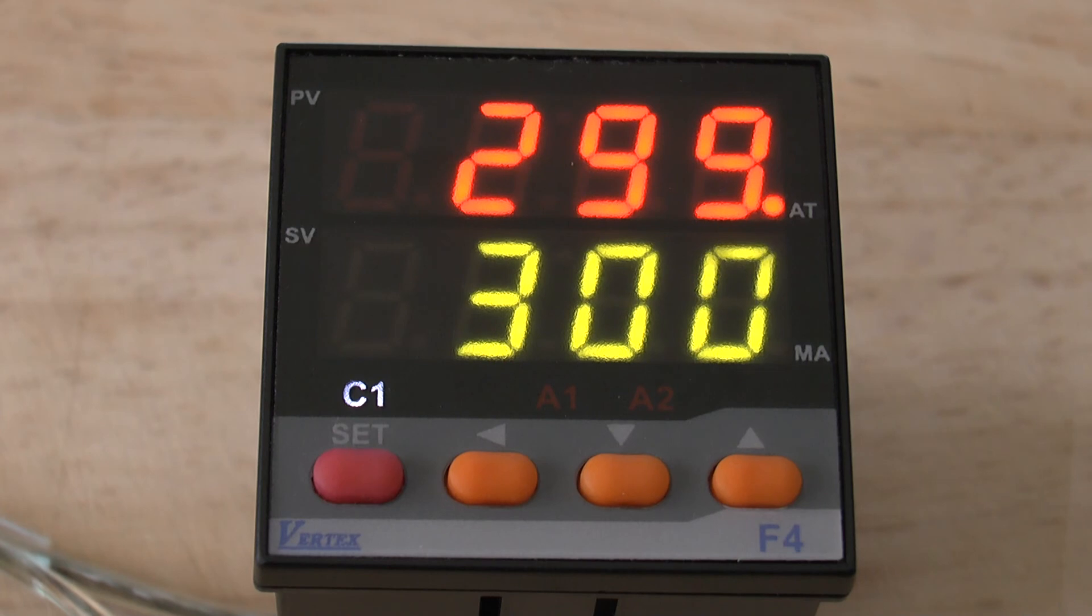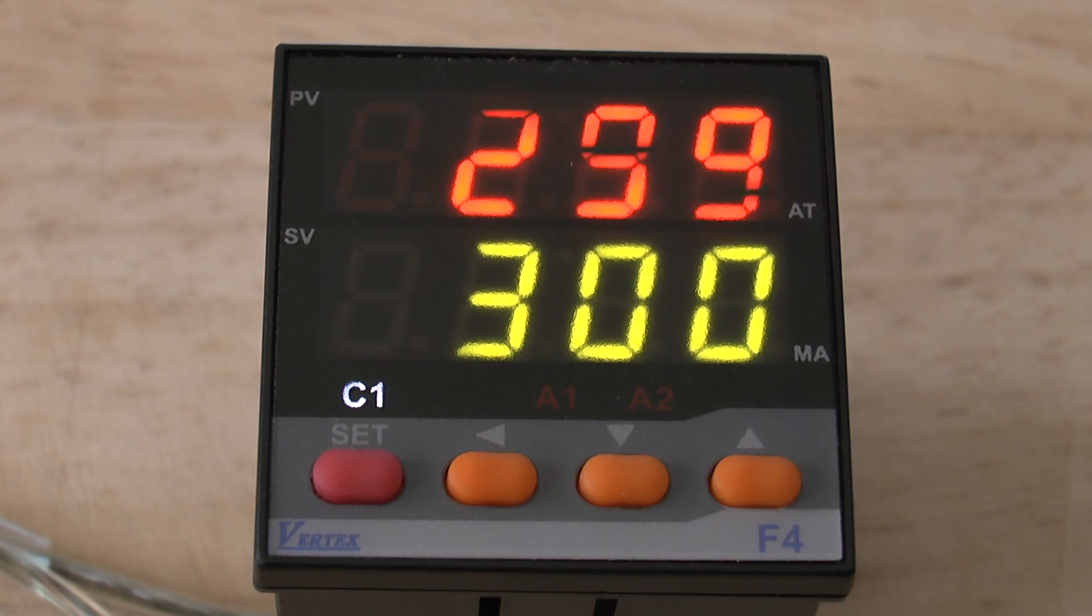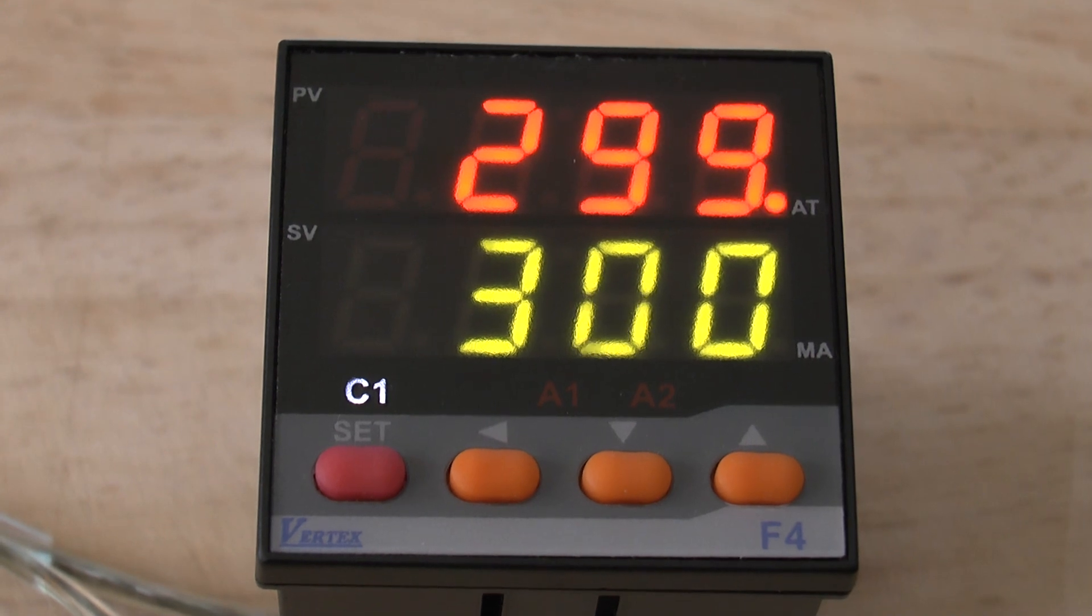It is important that while the controller is doing the auto-tune function, you do not change anything. For example, if this is on an oven, don't open the oven door or put anything else in the oven. Just leave it to do the whole auto-tune cycle, which could take a few minutes up to a maximum of 10 minutes, and then it will start controlling and give you good control at your SET point.